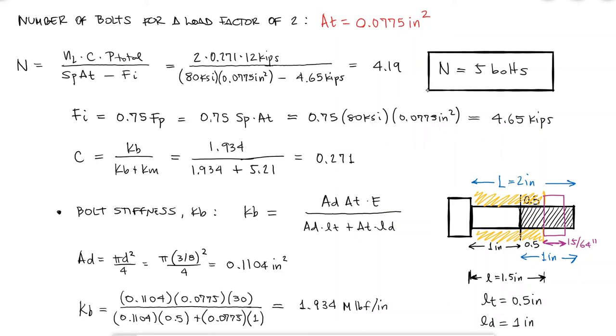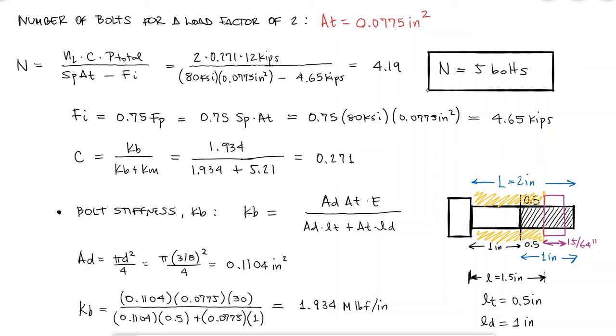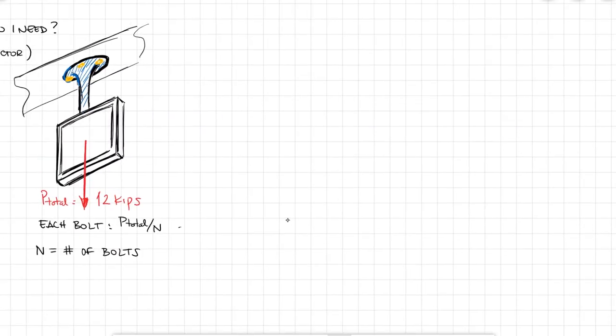Now that I have the number of bolts, I can go back to calculating the three factors of safety indicators: the yielding factor of safety, the actual load factor with the actual number of bolts, and the factor of safety against joint separation.